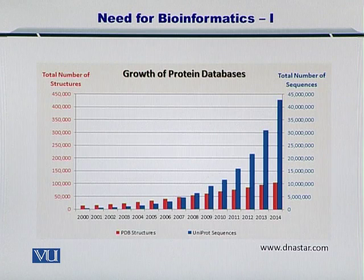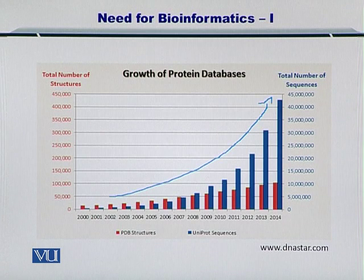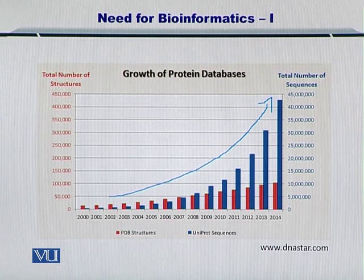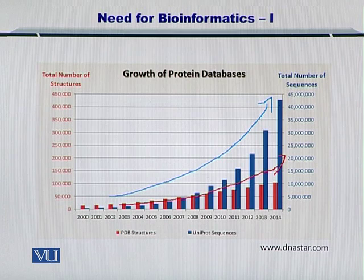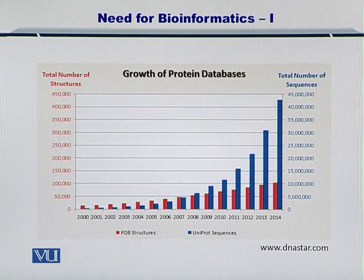Another example is the growth of protein databases. As shown here in this graph, the blue bars represent the number of sequences — the protein sequences — and they are in millions. But if you look at the red bars, these are the protein structures. So the protein sequences and the protein structures, both of them are growing at a very rapid pace. We need to utilize this data and understand how these proteins function within a cell. This is the job of a bioinformatician, and therefore we have a very nice opportunity with us.